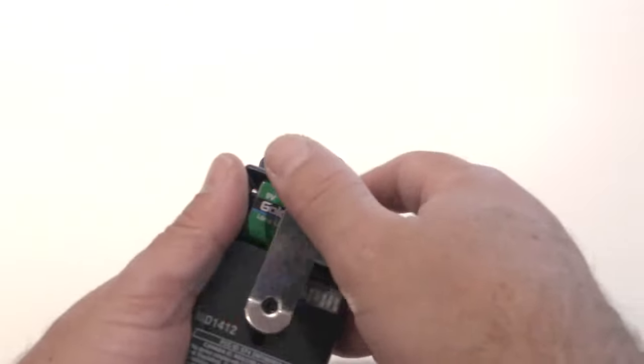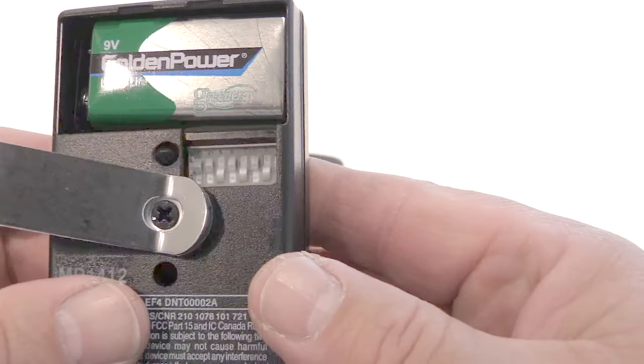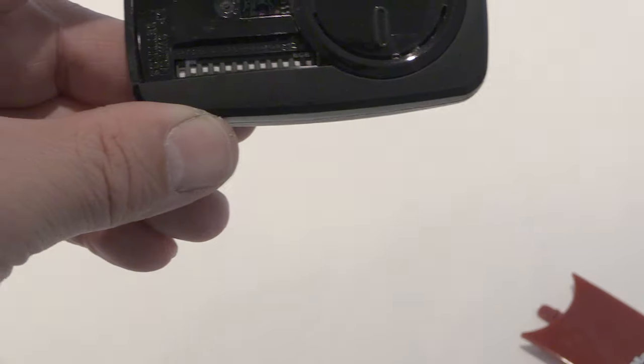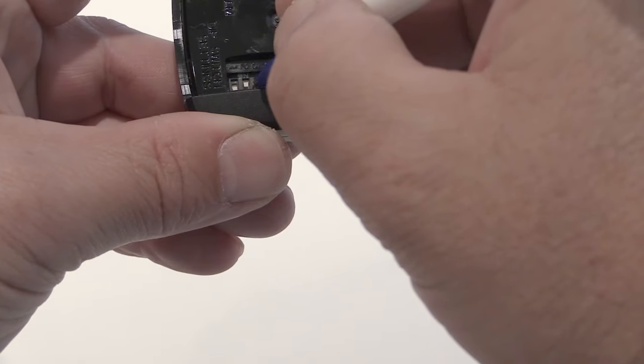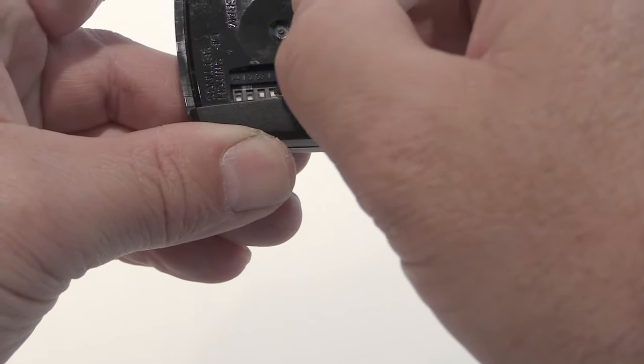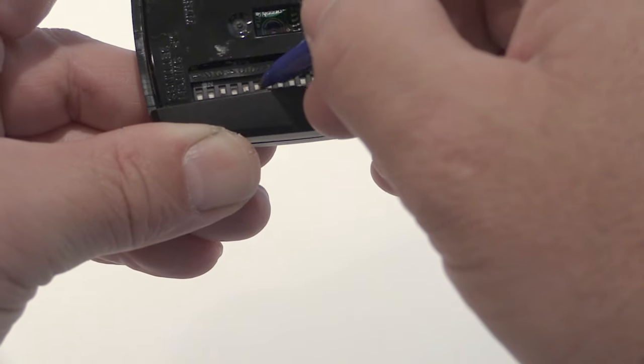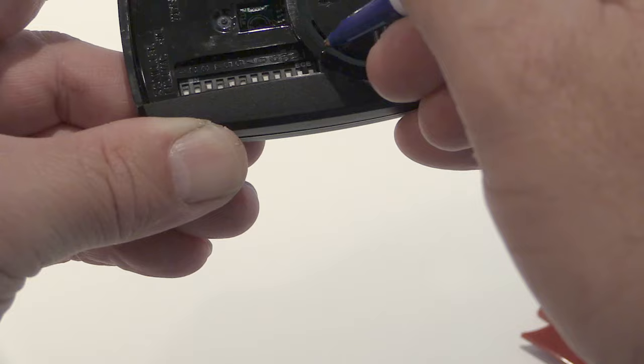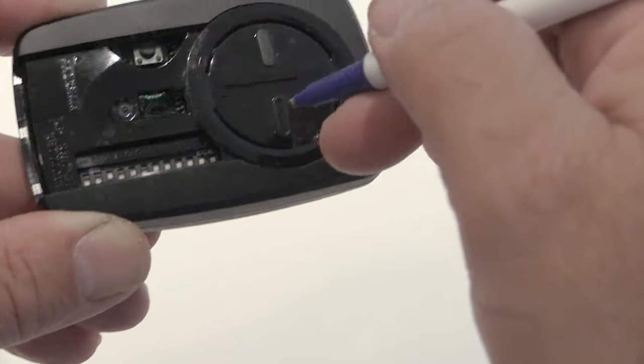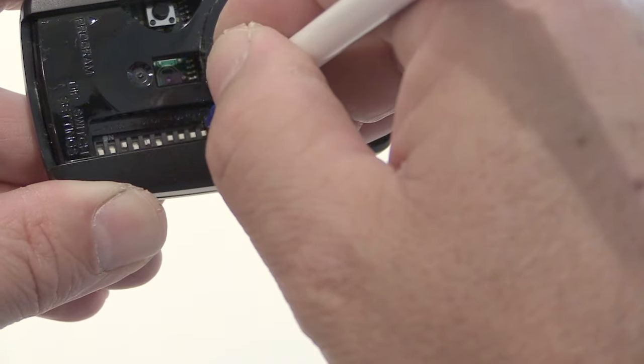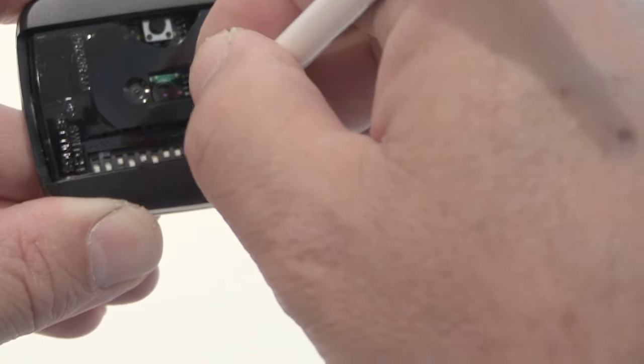Let's say we want to use this remote control to replace the Linear. You're going to look inside and find the code switches inside the Linear remote. Then take the new remote control and set the code switches to the exact same sequence. There's only eight switches in the Linear, so you're going to turn off switches 9 through 12 in the remote control.